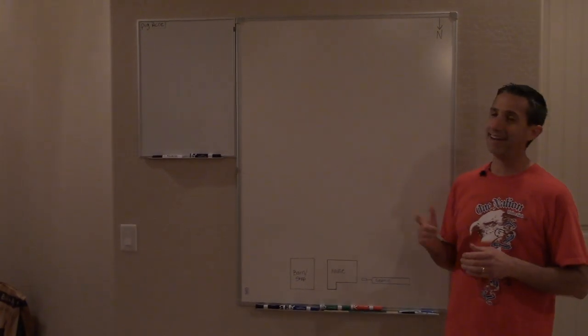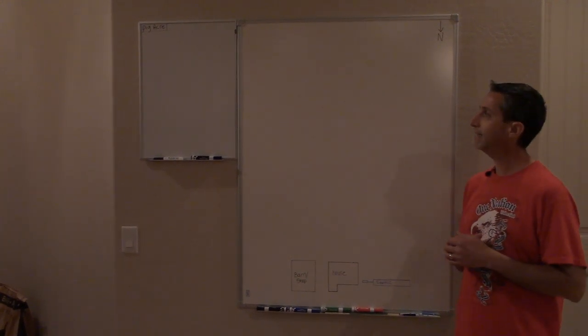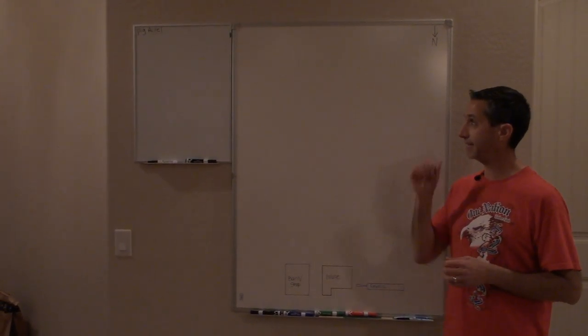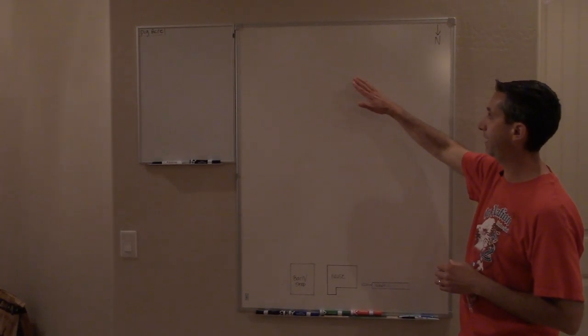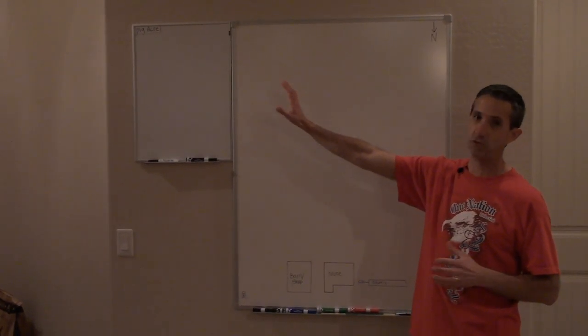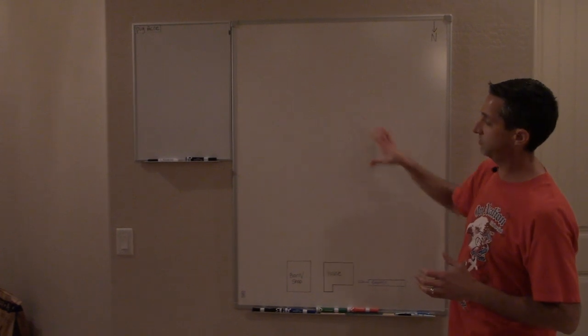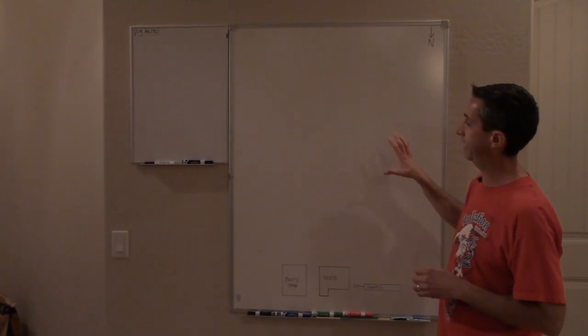So what you see behind me here is not 100% to scale, but it's about what the property looks like. So what we have is we have a five acre parcel here and then we have a one acre parcel there. So that's a total of six acres. So it essentially looks just like this, kind of an upside down L.